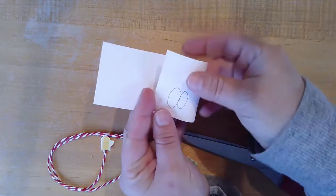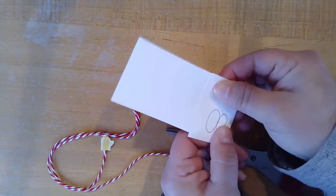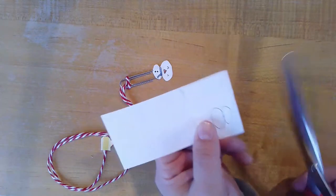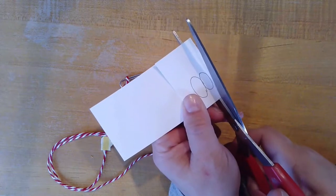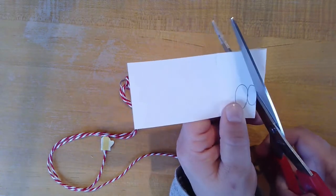And to make it easier on me for cutting, I'm folding the paper in half and then I'll have a perfect match when I cut. So I'm gonna cut out my outline snowman here.